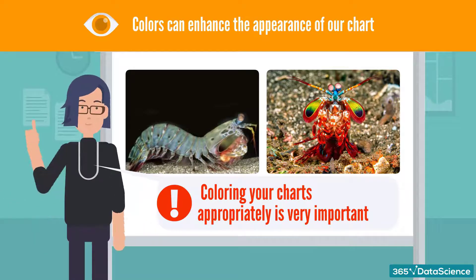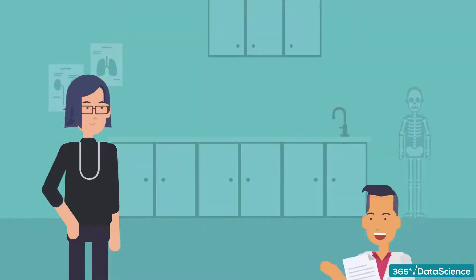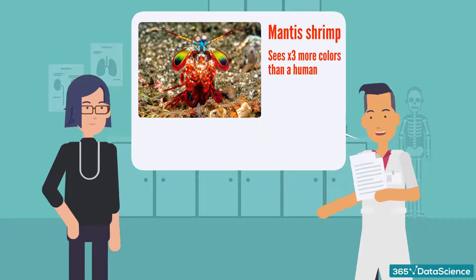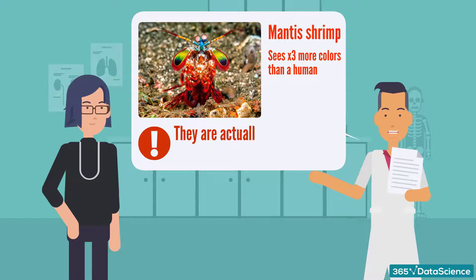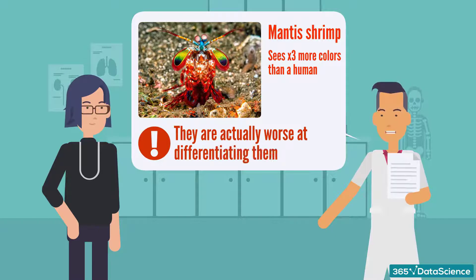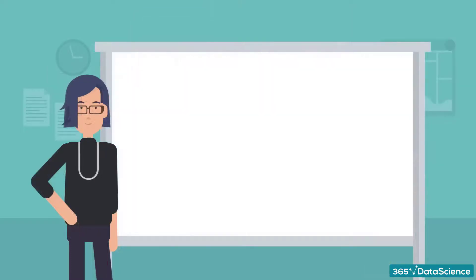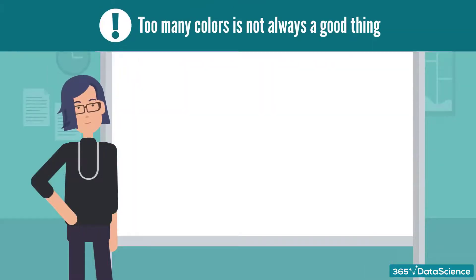Thanks, mantis shrimp, for teaching us that! However, there is something else that we can learn from the mantis shrimp. Scientists suggest that although they see three times more color than us, they are actually worse at differentiating them. The point is, too many colors is not always a good thing. And in fact, when talking about data viz, less is more.